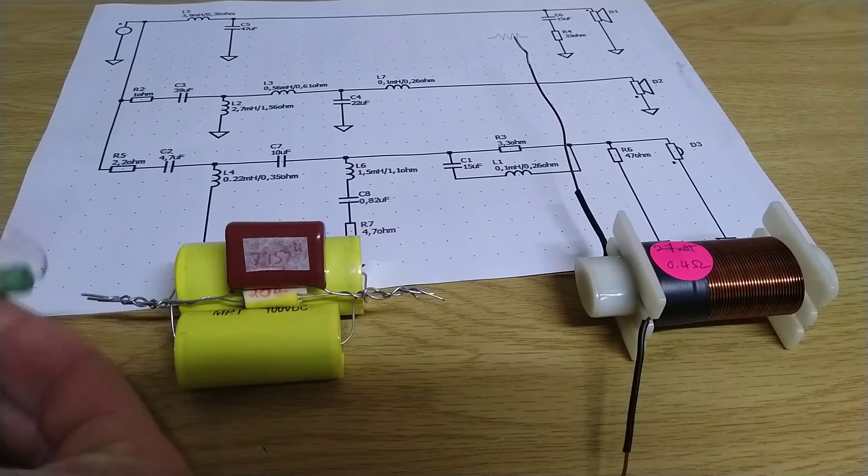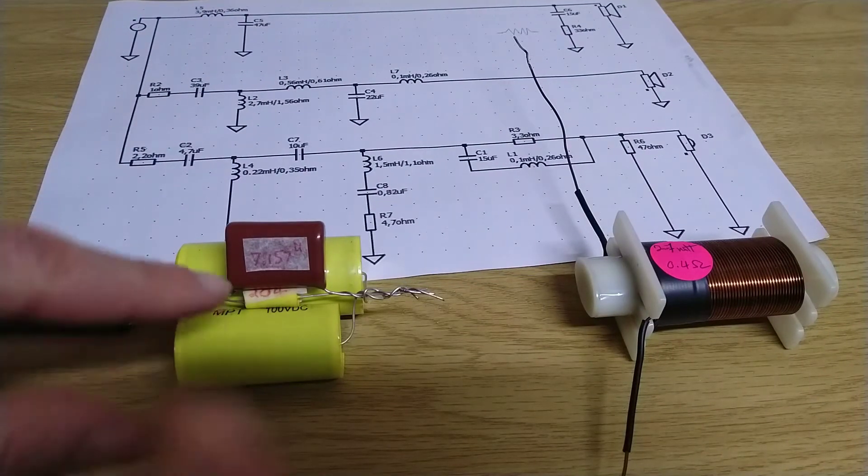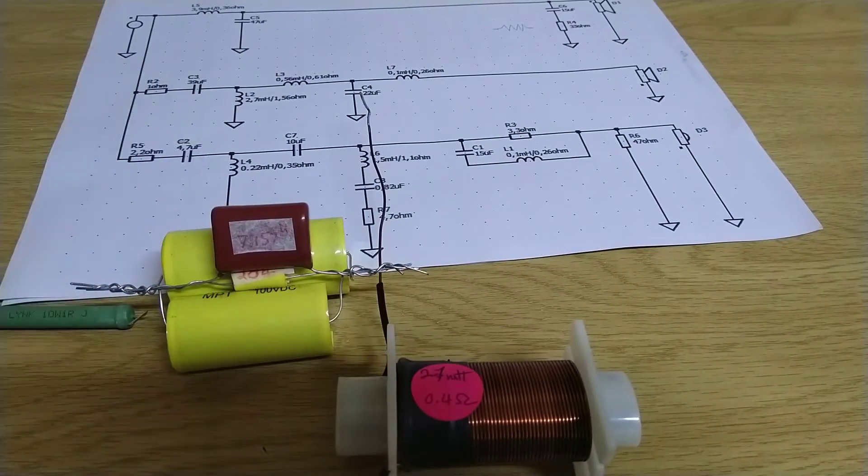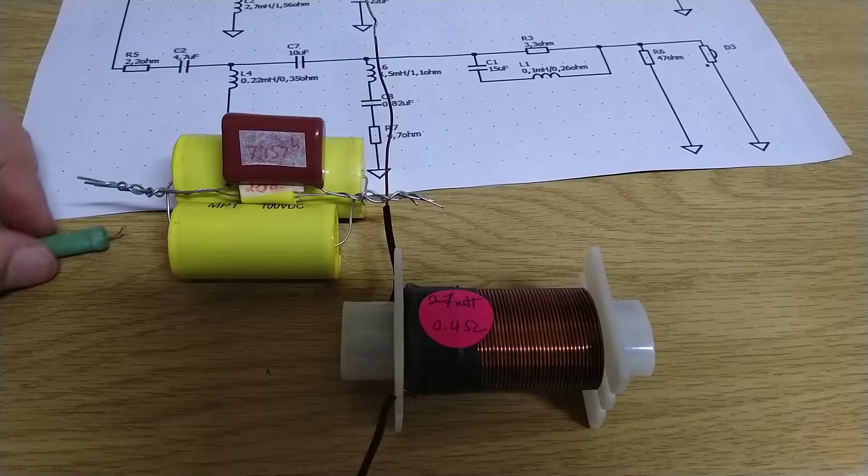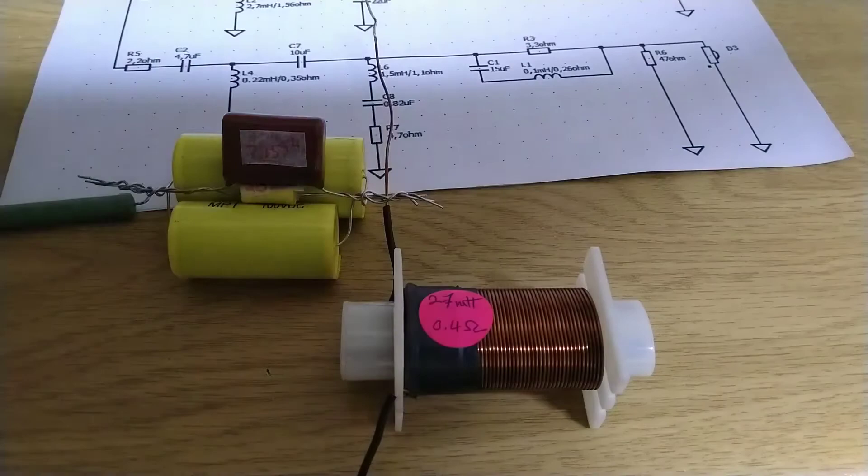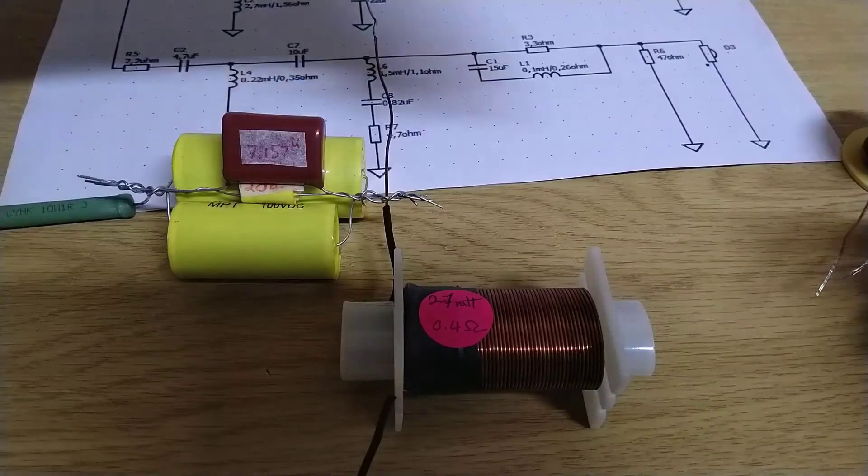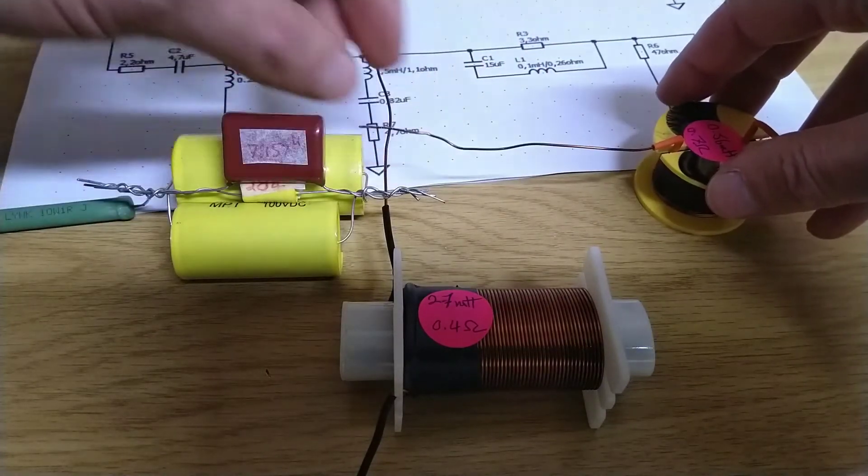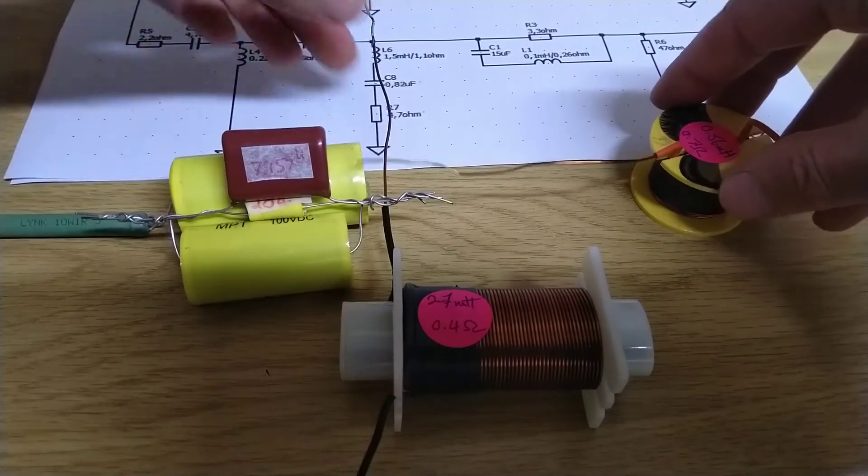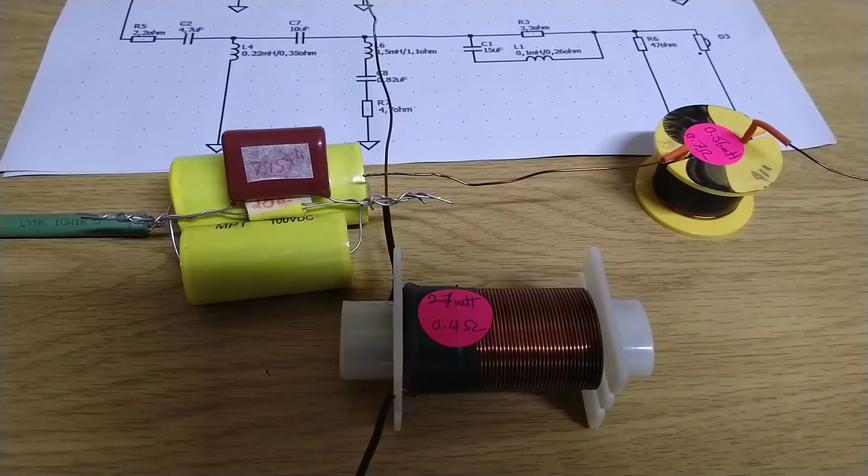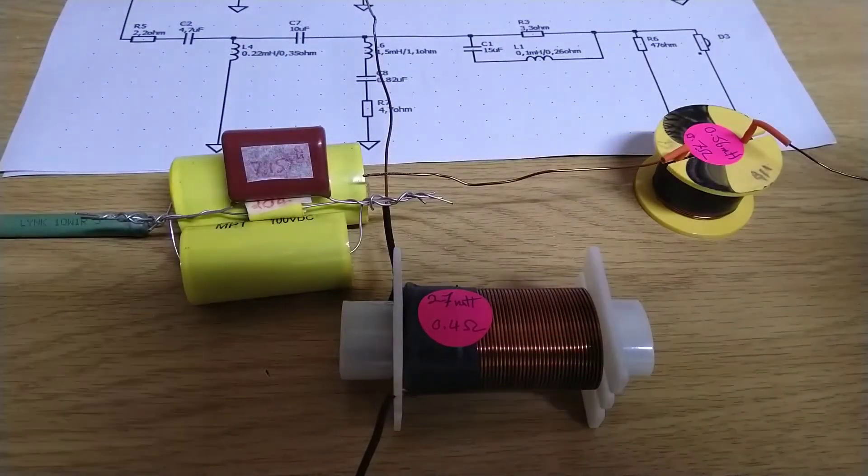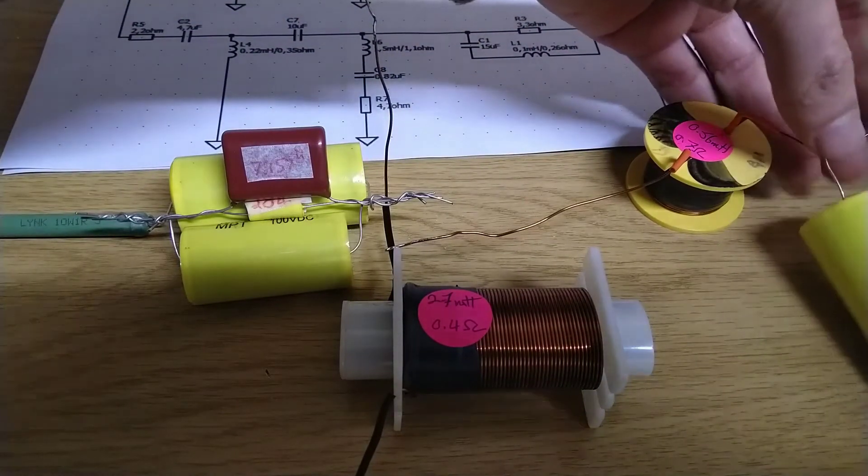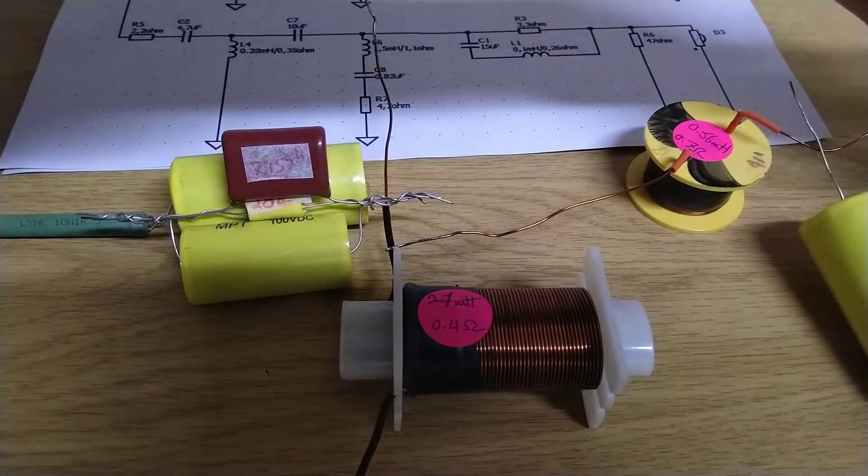This would be power in on that side. This is going to come out. That'll be, there we go, 2.7 mH on this inductor. Then another inductor, which is the 0.561, which will be on that one there. So that's pretty easy. It'll look like that. Then the capacitor, which will look like that. That's going to carry on to the next inductor, which will be like that.